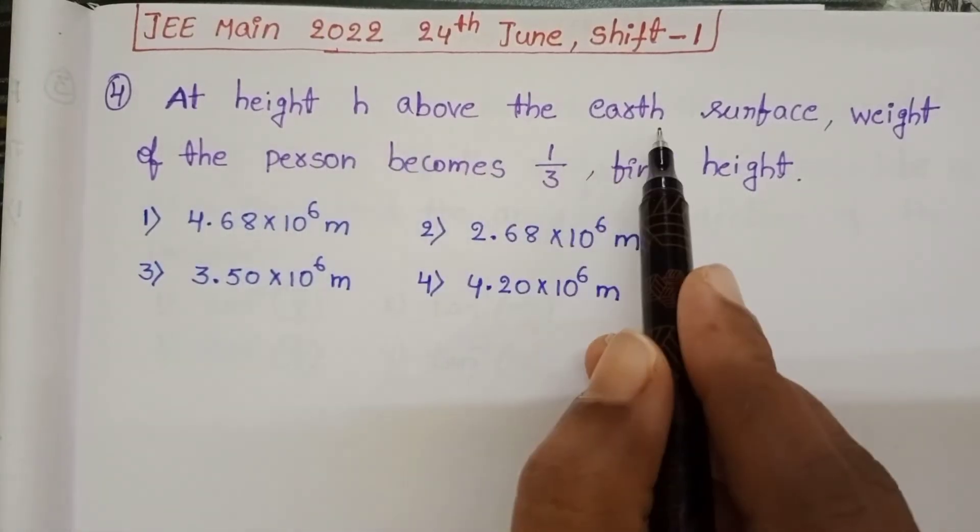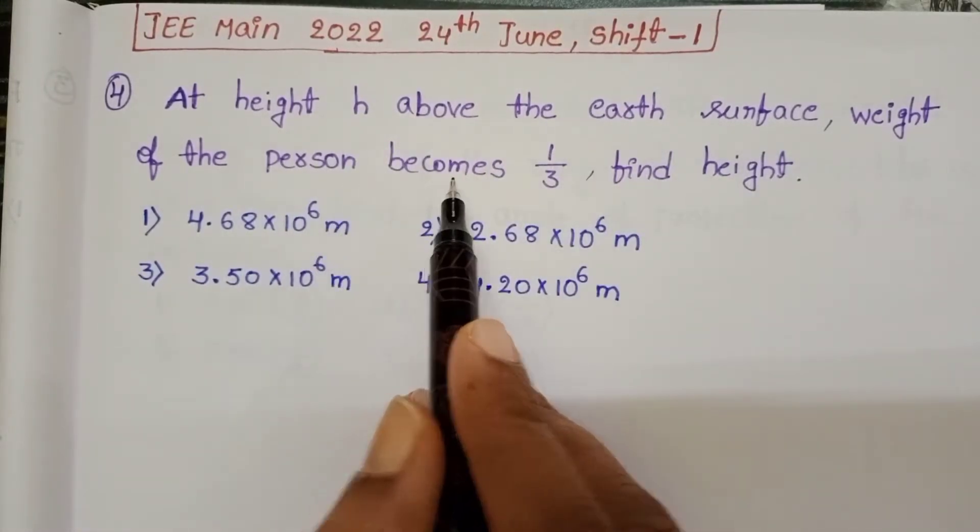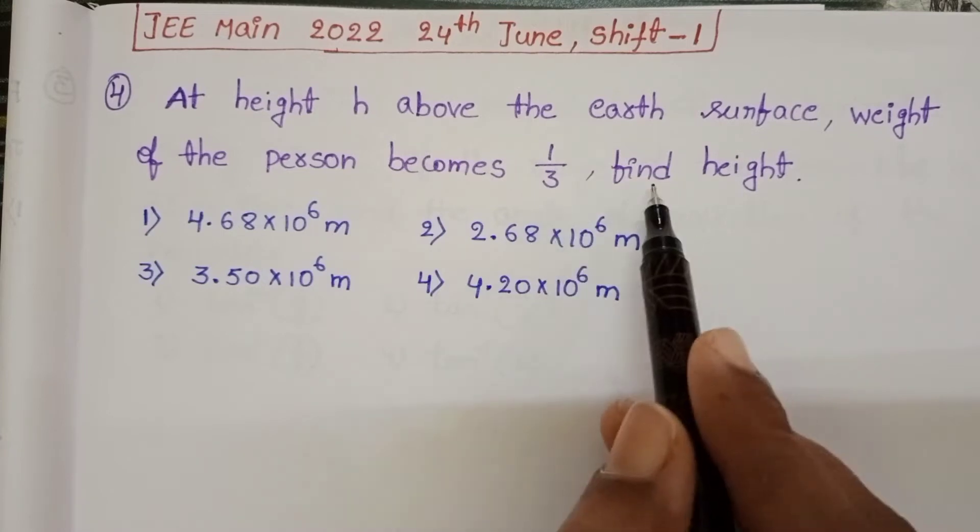At height h above the earth surface, weight of the person becomes 1 by 3. Find height.